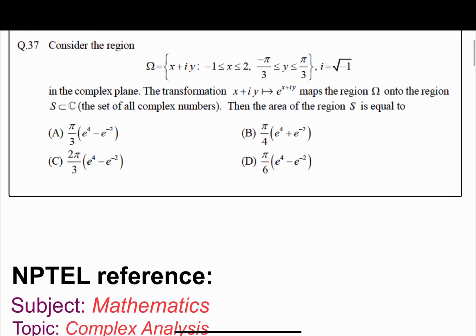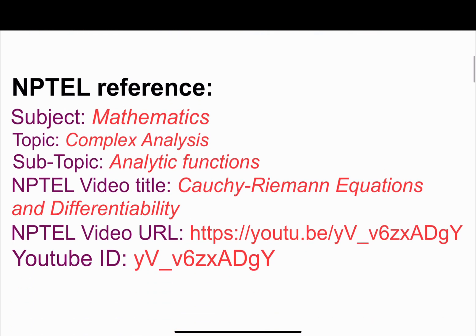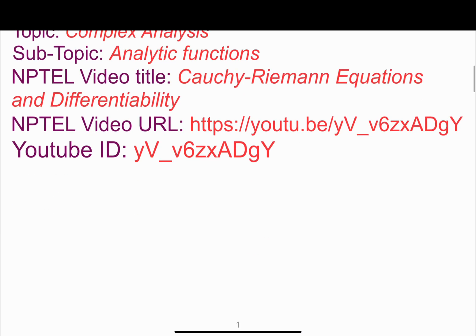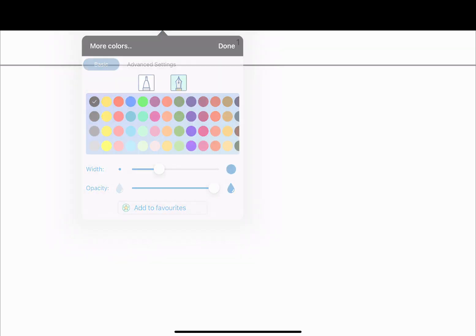In order to solve this — this is an NPTEL reference you can look into — we need to find the area of a region. We need one result first: in order to find the area of a certain region under some conformal map, let us state that result.